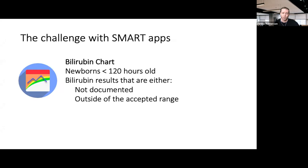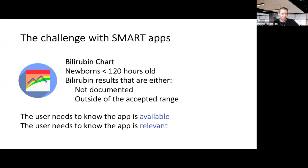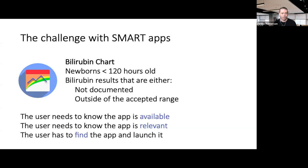This bilirubin chart app is especially useful when bilirubin results are either not documented or outside the accepted range — but only when those criteria hold true. However, the user needs to know that the app is available at their institution, that it's been purchased and made available, and know the criteria for when it's relevant. And they need to know how to find and launch it in their EHR — which menu items to click.